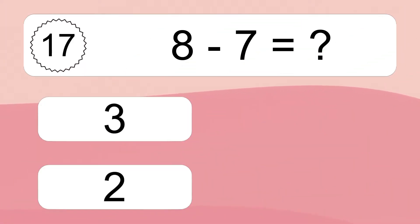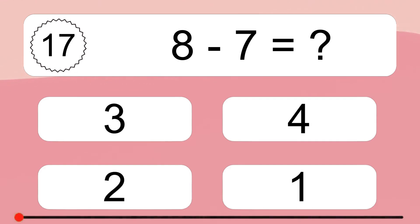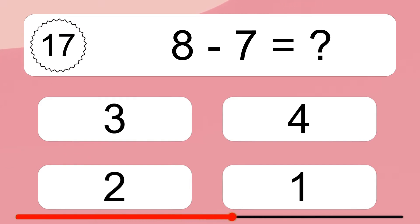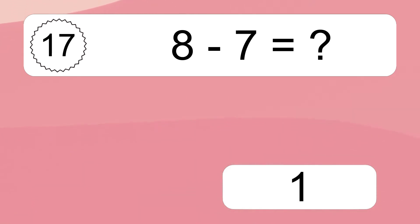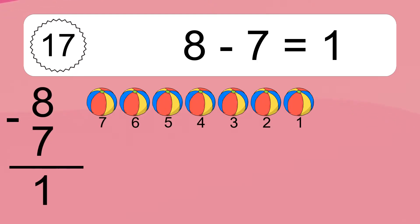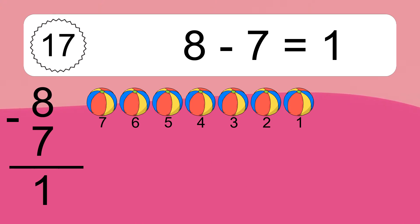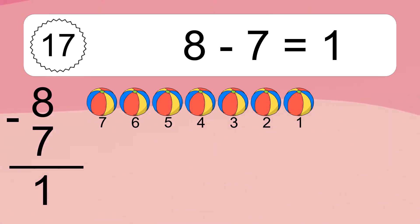8 minus 7 equals what? 8 minus 7 equals 1. Let's count it. 7, 6, 5, 4, 3, 2, 1.